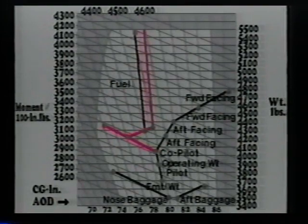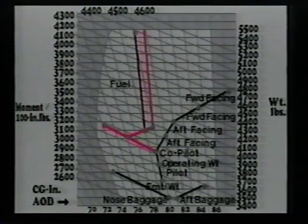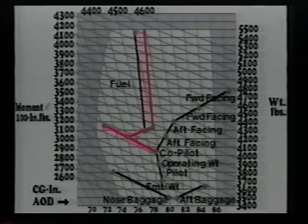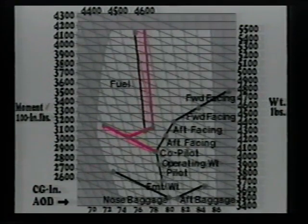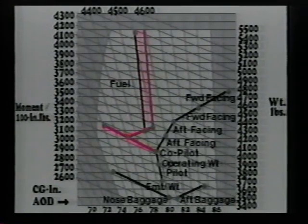The pilot decides to take 120 pounds from the nose and move it to the aft baggage compartment. To do this he will go up the nose baggage line and establish a new anchor point at the 180-pound increase point, then rotate to parallel the aft baggage line and rise 120 pounds as found on the right side scale. We need draw no more lines — the visual presentation is clear. We can load fuel to full tanks of 5,534 pounds, allowing for start and taxi, and have a 10-pound over-gross condition at takeoff. It should be noted that overloads this small have been mentioned in accident reports.